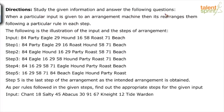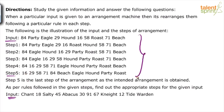Study the given information and answer the following questions. When a particular input is given to an arrangement machine, it rearranges them following a particular rule in each step. The illustration shows the input and steps of arrangement up to step five, which is the last step. As per the rules followed, find out the appropriate steps for the given input. The first thing in machine input-output problems is to look at the last step — here, step five.